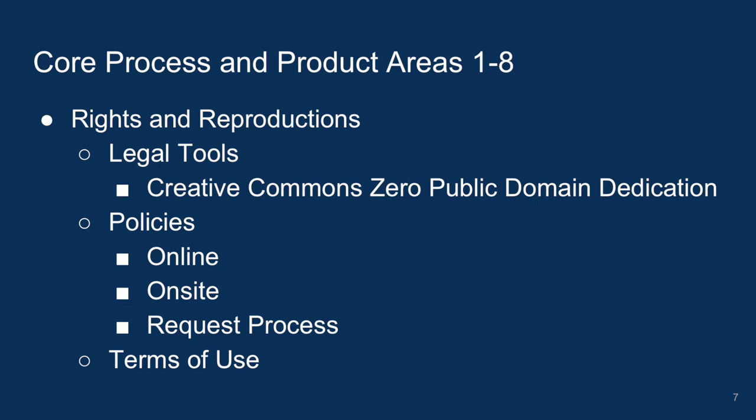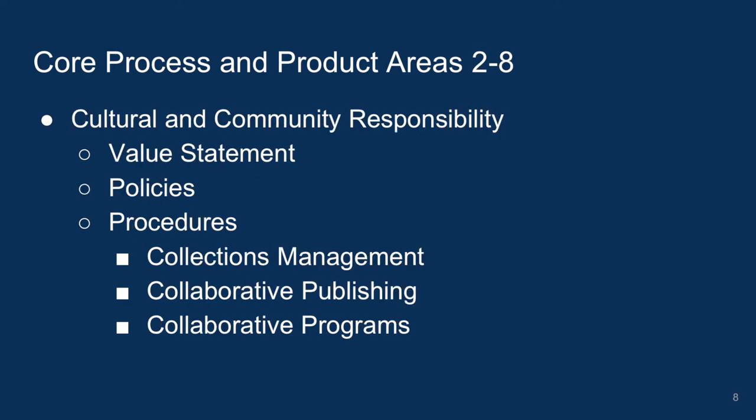You'll need to update your request process — form submissions, policies around how you fulfill image requests, and your terms of use. Another important area is cultural and community responsibility. You may be working with a collection that has an important community of practice, a different identity or heritage that matters to them and to you as a museum steward. It's important to think through the implications of your collections data and your relationships with constituents, and how to manage those effectively. You'll want to identify a value statement that speaks to the intentionality of that relationship, and then make fundamental changes to collections management systems, publishing processes, and programs in partnership with those communities.